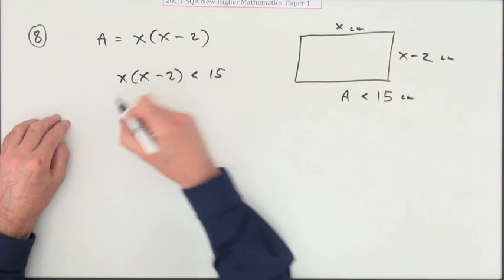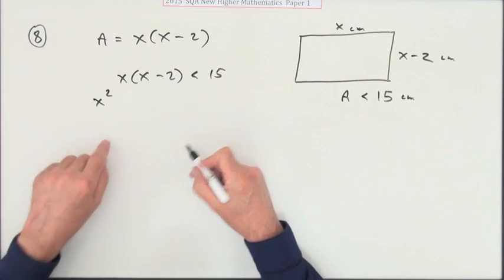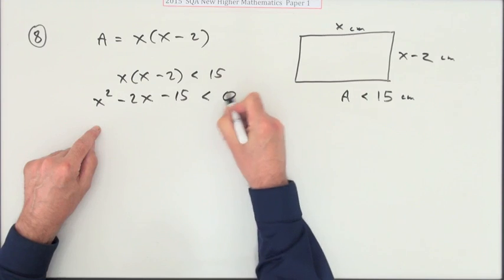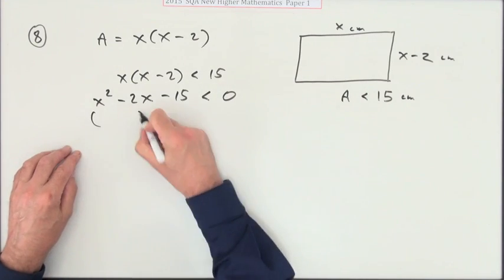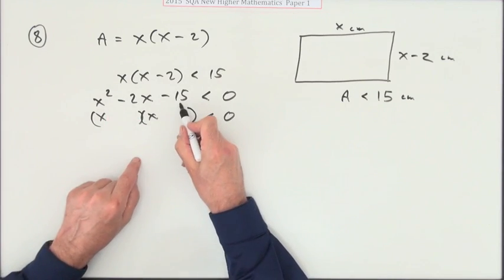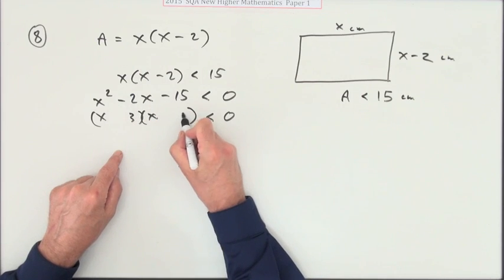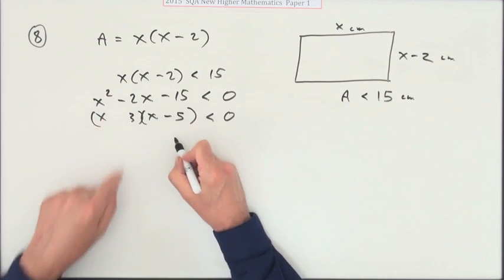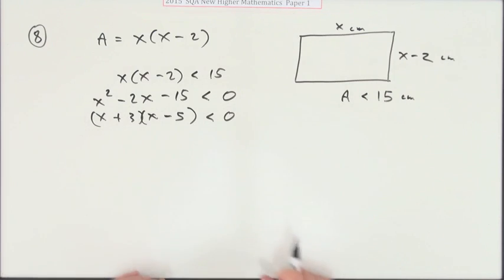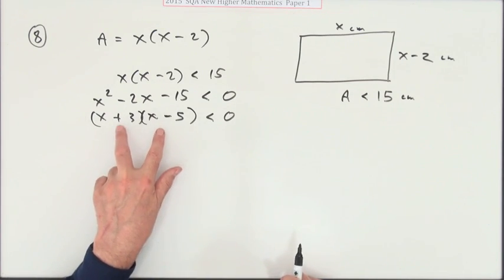So you end up with x times x minus 2 is less than 15. You know where that's going—you're going to have a quadratic inequality. So it's x squared minus 2x minus 15 is less than 0. Now factorize it: factors of 15 that have a difference of 2 are 3 and 5. Make the larger one negative, so x plus 3 times x minus 5 is less than 0.